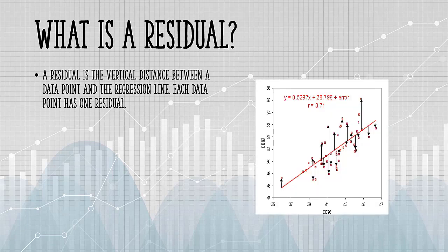A residual is the vertical distance between a data point and the regression line. Each data point has one residual.